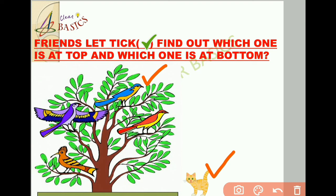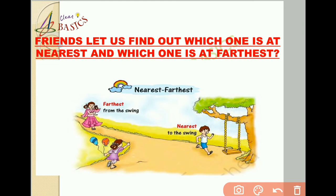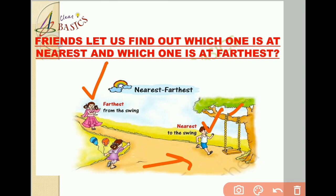Friends, if you have not seen my previous video, click the eye button on the top of the screen to check out the best content. Now let us proceed to our next topic. Here we can see a swing hanging from the branch of a tree, and three children are running towards the swing. Can you tell me which child is nearest to the swing? Yes, you guessed correctly — this child is nearest to the swing. Can you guess which child is farthest from the swing? Yes, your answer is absolutely correct — this child is farthest from the swing.